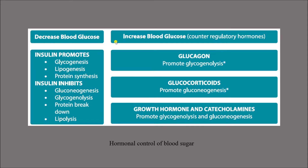Insulin also inhibits protein breakdown and lipolysis. Counter-regulatory hormones act in the opposite direction. Glucagon promotes glycogenolysis; glucocorticoids promote gluconeogenesis, producing glucose and raising blood glucose level. Growth hormone and catecholamines also promote glycogenolysis and gluconeogenesis. All these hormones are called counter-regulatory hormones and they increase the blood glucose level.